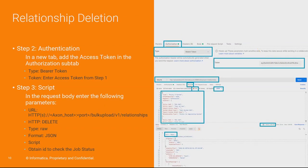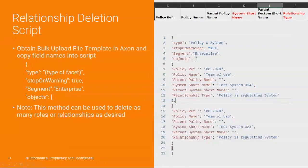I'll now show you how to create the script. It's really important to use the bulk upload file template that's in Axon to build your script. They all follow a certain pattern where the type will be the type of facet, stop on warning is true, and the segment will be whatever segment it's placed in Axon — in this case, Enterprise. The objects are all the headings from the bulk upload file. The spelling is important so that it can match the field in Axon. This script can be used to delete as many roles or relationships as desired.